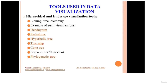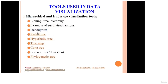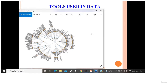The next category of tools is Hierarchical and Landscape Visualization tools. Hierarchical means it deals with hierarchy — linking trees, hierarchies, and so on. The first example is the Dendrogram, which shows a hierarchical pattern with subtrees. Then you have a Radial Tree. The next one is the Hyper Bullet Tree. Then you have a Tree Map.